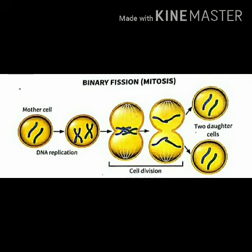This cell division is a way of reproduction in unicellular and lower organisms only. But in multicellular organisms, the way of reproduction is different — it takes place by male and female gametes, which will be explained in chapter 14.